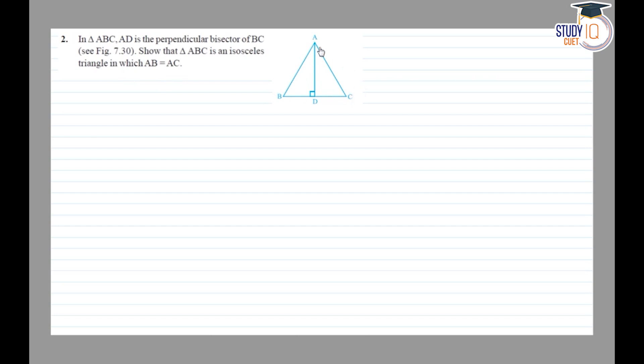We have a diagram of the figure given. So AD is the perpendicular bisector of BC. This angle is 90 degrees, and BD is equal to DC.